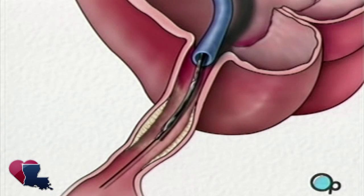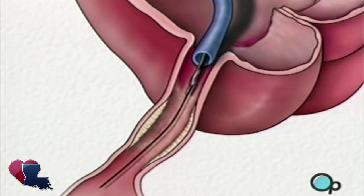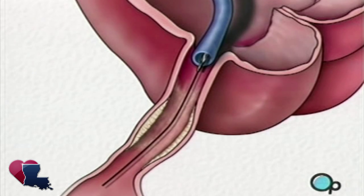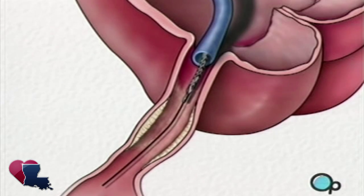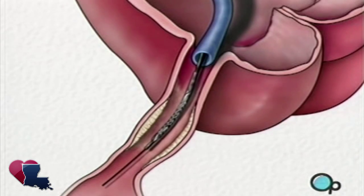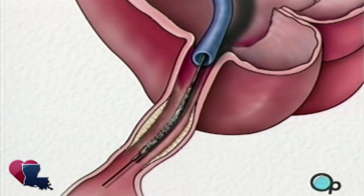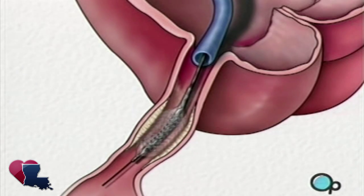The balloon catheter is then withdrawn and another balloon catheter is inserted. This balloon has the mesh stent tube wrapped around it. Once this tube has been placed in the center of the now widened area of the artery, the balloon is briefly inflated. The stent expands until it hugs the walls of the artery.